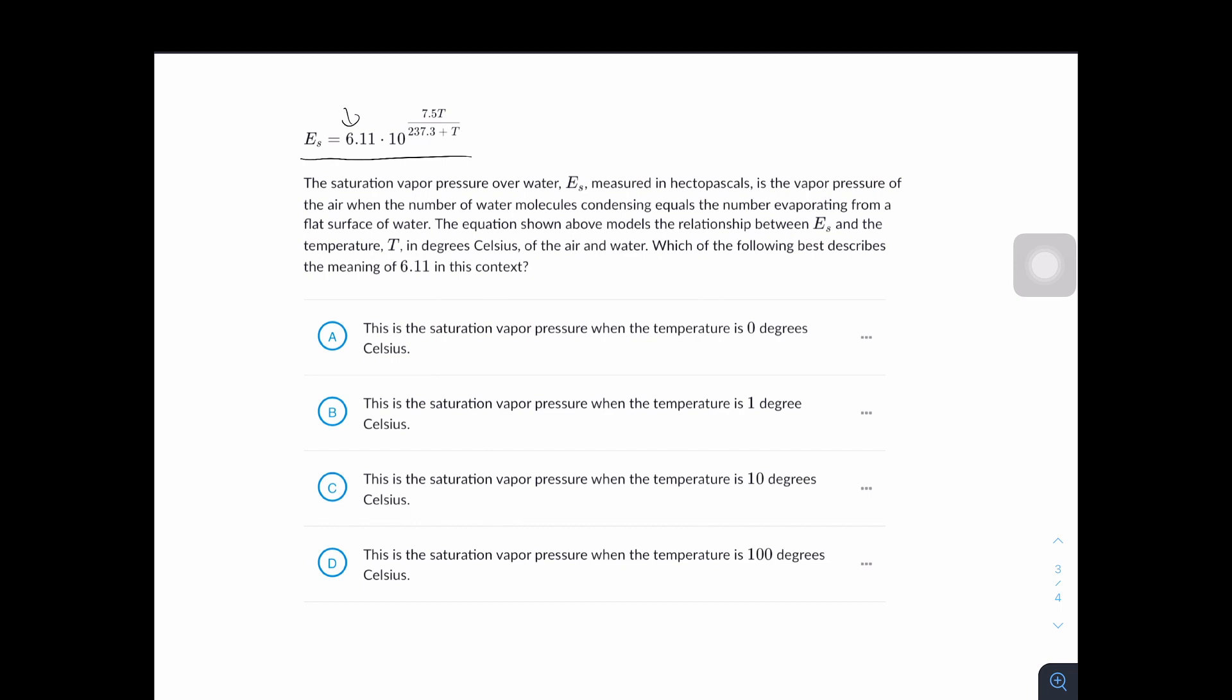So let's look at the answer choices. A says this is the saturation vapor pressure when the temperature is zero degrees Celsius. So let's plug in zero for T. When we do that the 7.5T becomes zero and this makes this whole exponent zero. And any number raised to the 0th power is 1. So Es is going to be equal to 6.11.